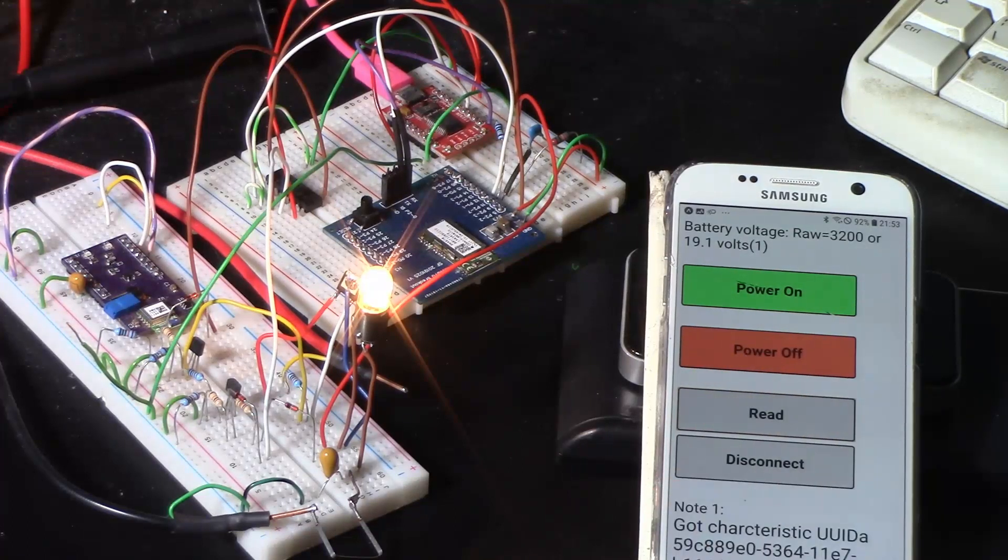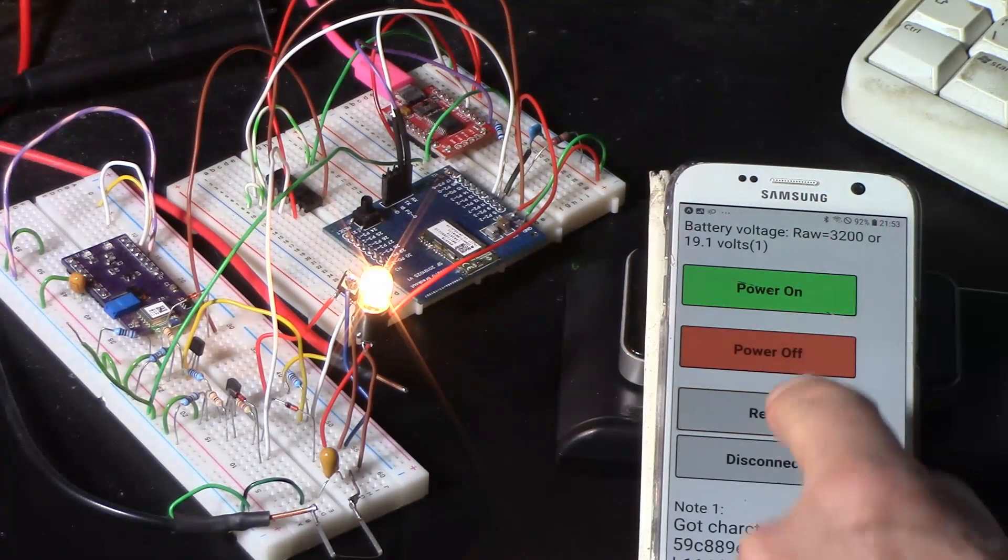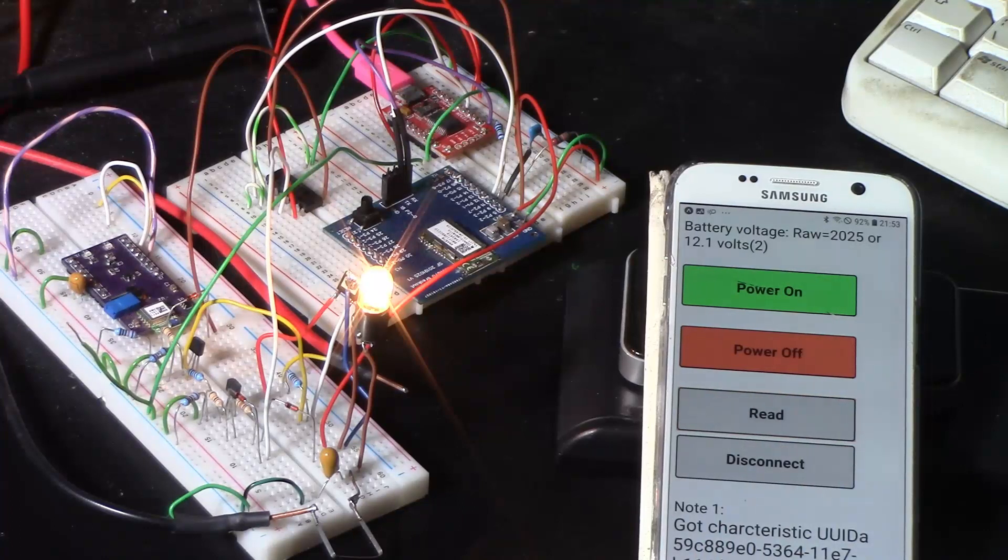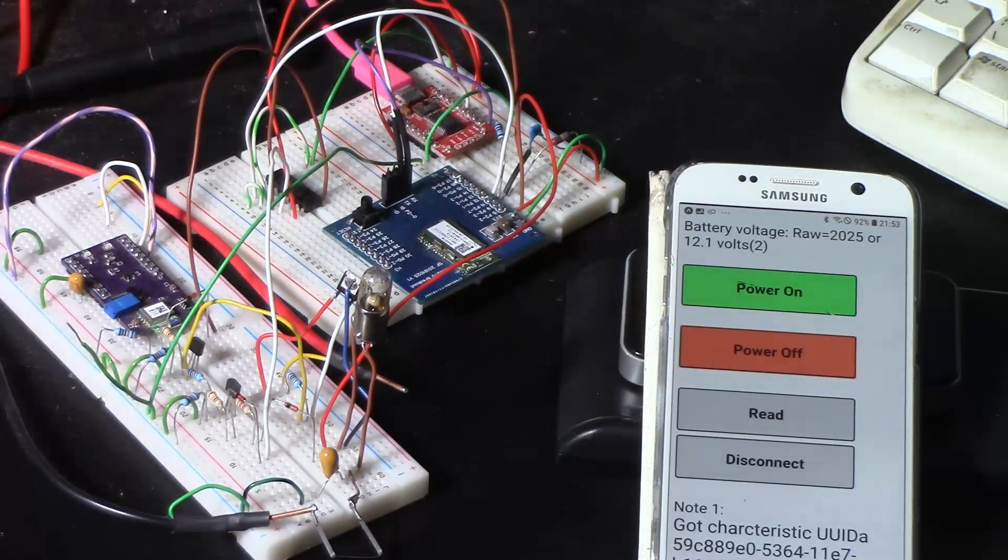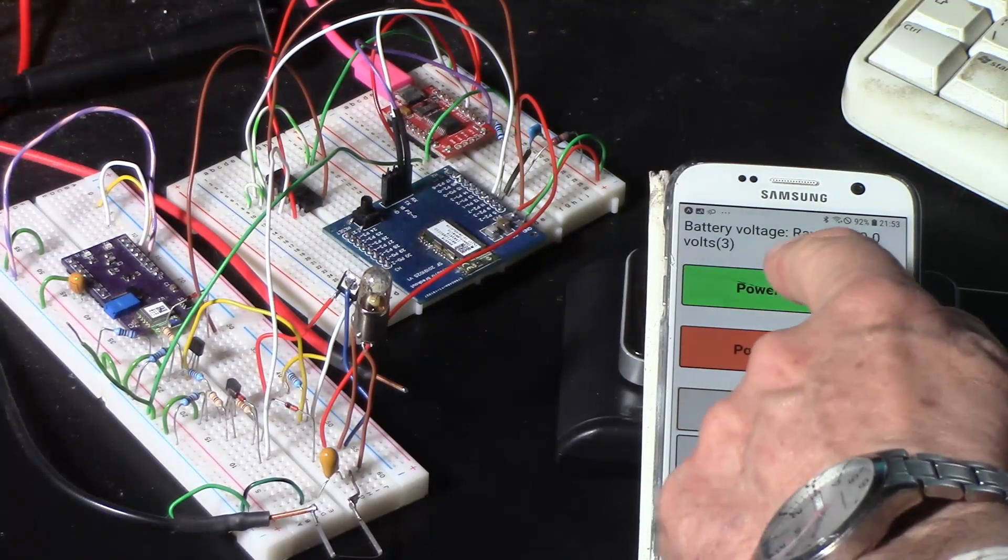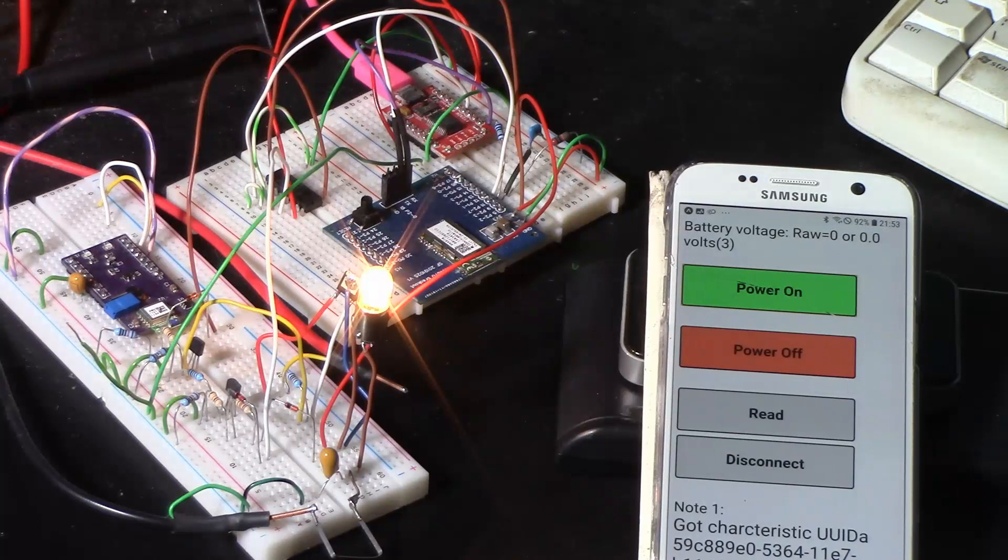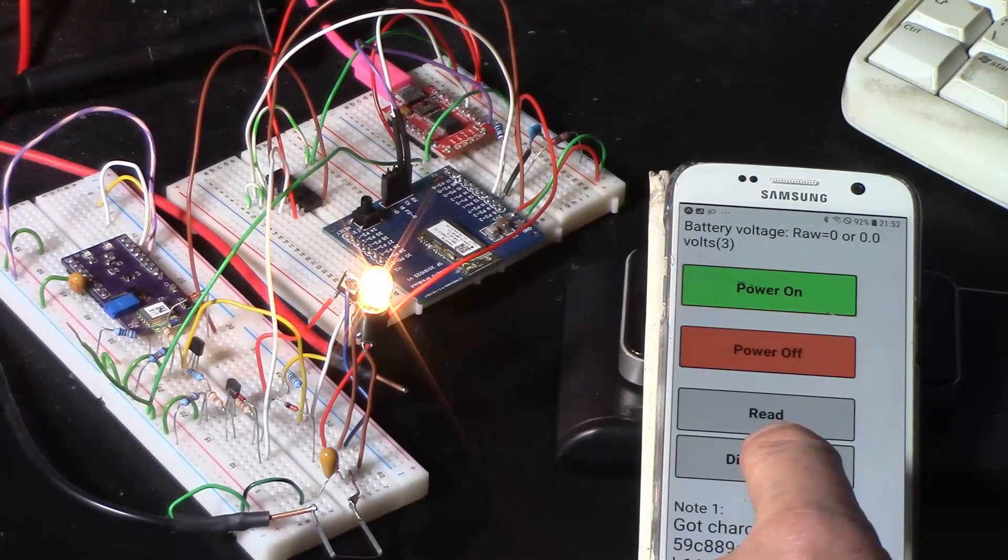So when the power's on, I can read the battery voltage. And for some reason, this is another problem with the RN4870. It always comes up completely wrong the first time. But if I read it again, it now tells me the right answer, which is 12.1 volts. And if I turn the power off. Oh, it worked that time. Read the battery voltage again. It obviously shows nought. So I can do that. And I can disconnect.